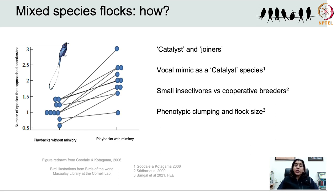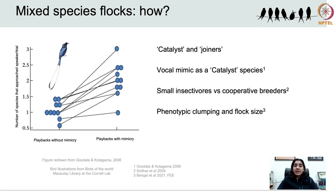Dr. Hari Sridhar and colleagues used a comparative global analysis of mixed species flock studies to find that small-sized insectivorous species are more likely to be joiners, and cooperative breeders tend to be leaders of mixed species flocks. In a subsequent study using a null model approach, Dr. Prithi Bangal, Dr. Hari Sridhar, and colleagues at the Centre for Ecological Sciences found that small flocks are more phenotypically clumped for body size than expected by chance, and as flock size increased the phenotypic assemblages became more random.